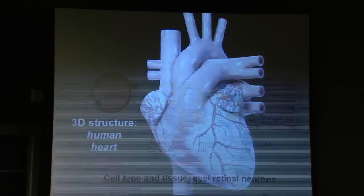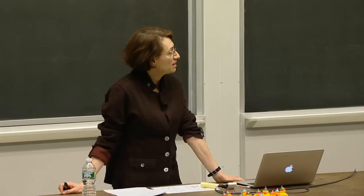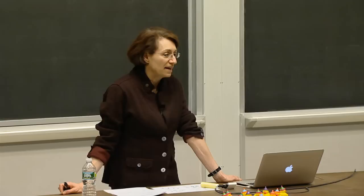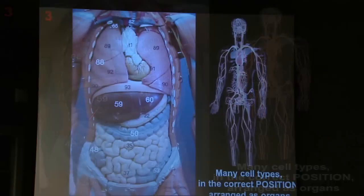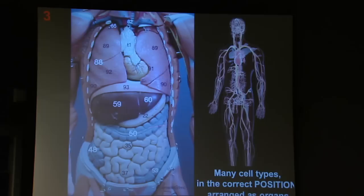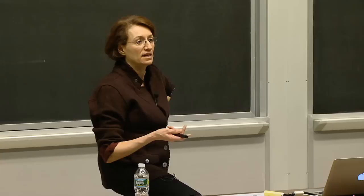3D structures are critical. Consider engineering the heart — the only raw material you have to use is cells. How do you get something that looks like a human heart and carries out the exquisitely regulated pumping function? It's also a question of position. We're not just made of lots of different kinds of cells grouped into organs — they're also positioned in the correct place. If you open up the abdominal cavity, you can see these organs arranged packed together beautifully. It's no accident; they get there because they're told to get there. If they're positioned incorrectly, the medical consequences are very severe.